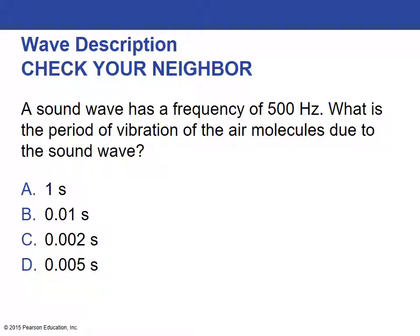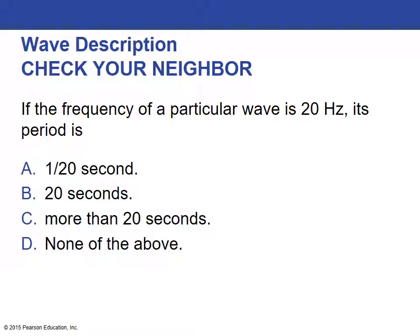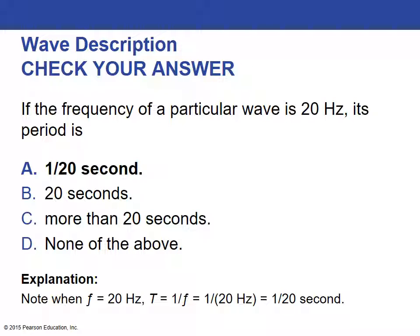Review question: A sound wave has a frequency of 500 Hz. What is the period of vibration? Using period equals one over frequency: 1/500 = 0.002 seconds. Another question: If the frequency of a wave is 20 Hz, what is its period? Period = 1/20 Hz = one twentieth of a second. The bigger the hertz, the more waves passing per second.